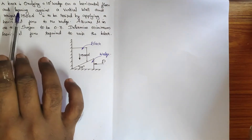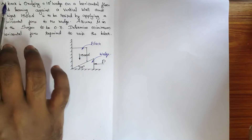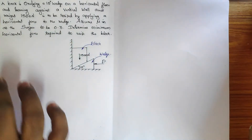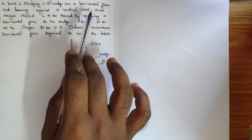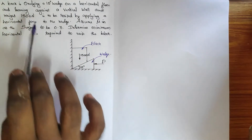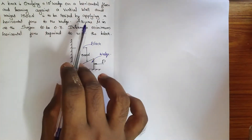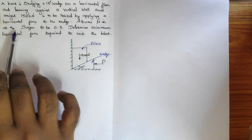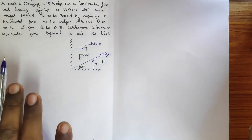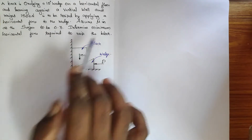Welcome, students. I come up with a question from wedge friction. A block is overlying a 10-degree wedge on a horizontal floor and leaning against a vertical wall. The weight of 1500 Newton is to be raised by applying a horizontal force to the wedge. The coefficient of friction mu is 0.3 for all surfaces. Determine the minimum horizontal force required to raise the block.